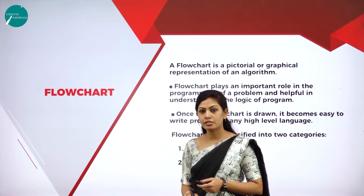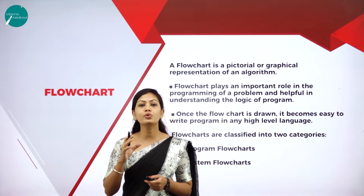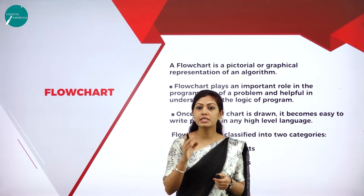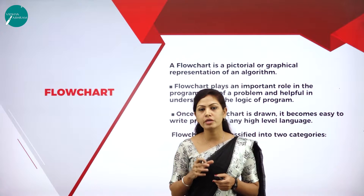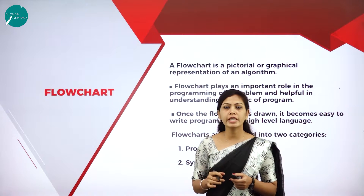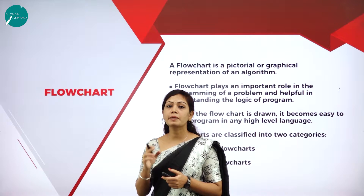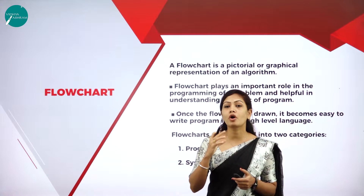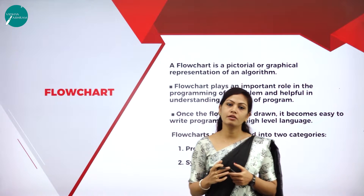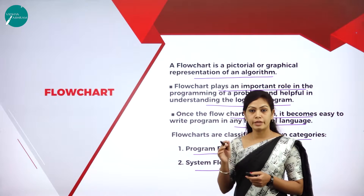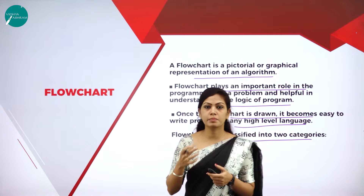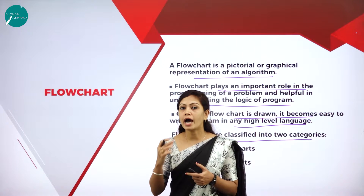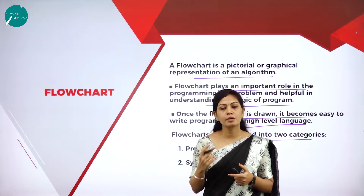What do you mean by flowchart? The algorithm and flowchart are two types of tools to explain the process of a program. An algorithm is a step by step analysis of the process, while a flowchart explains the steps of a program in a graphical way. A flowchart is a graphical or pictorial representation of an algorithm with the help of different symbols, shapes, and arrows to demonstrate the process of a program.